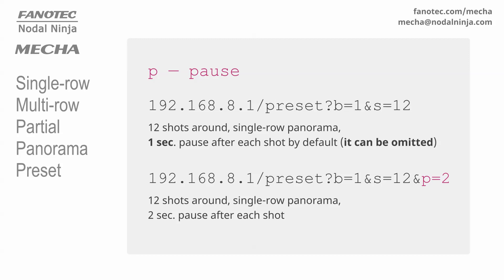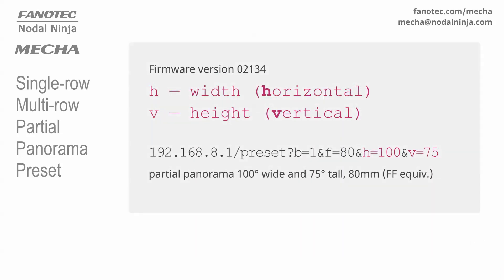The fourth parameter, P, is the pause after each shot, in seconds, and it is optional. The default value is 1 second. For example, P equals 2 means a pause of 2 seconds after each shot. Starting with firmware version 02134, you can use H and V parameters to specify the height and width of a partial panorama in degrees. For example, this will create a preset for a partial panorama for 80mm lens, 100 degrees wide and 75 degrees tall. The focal length is required in this case.